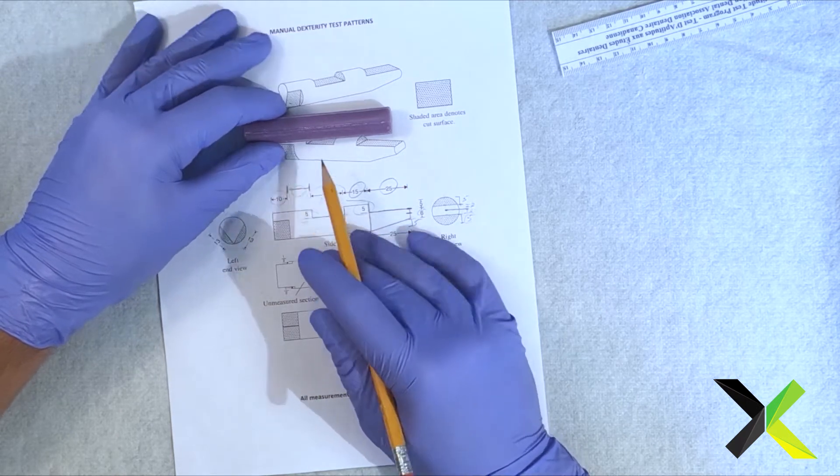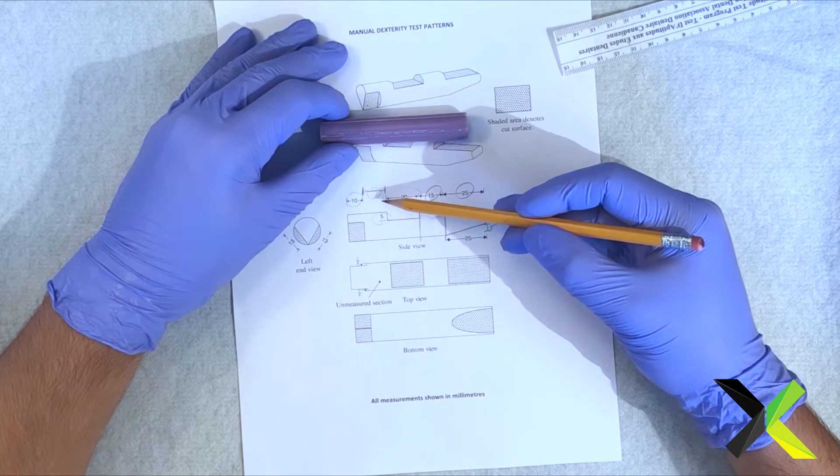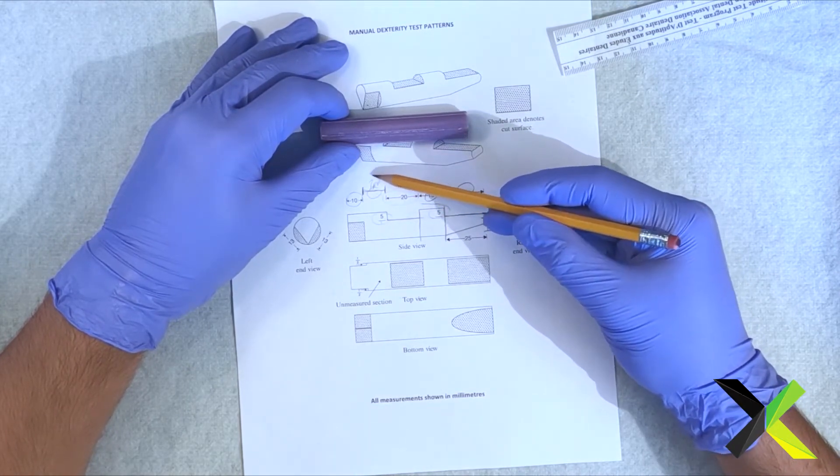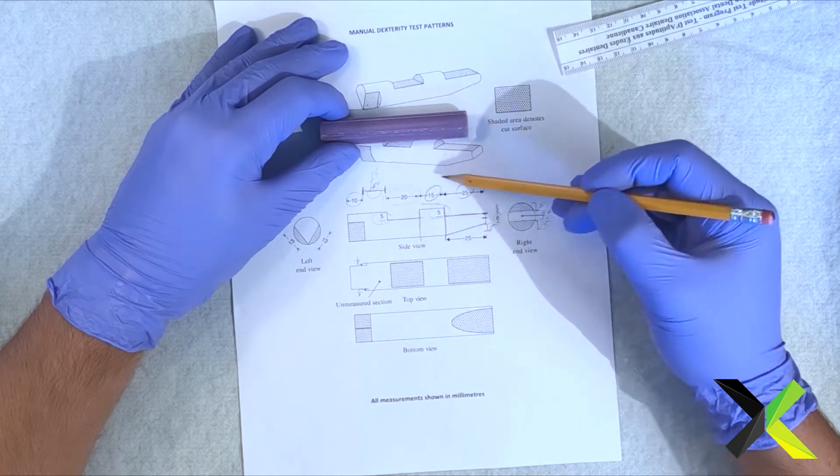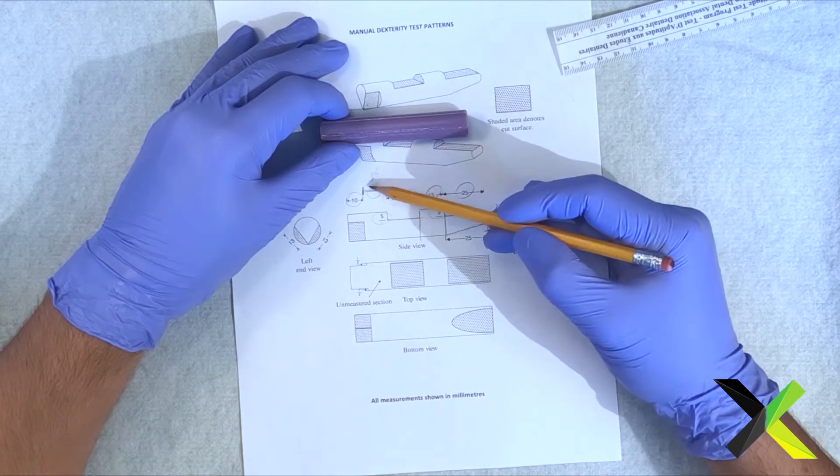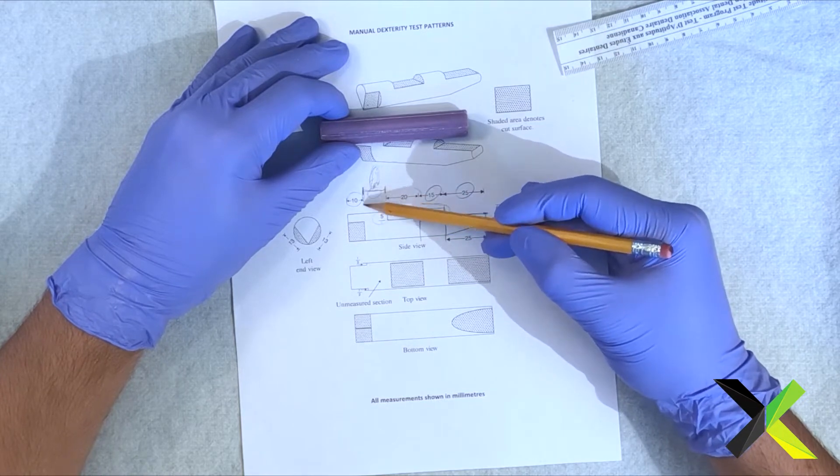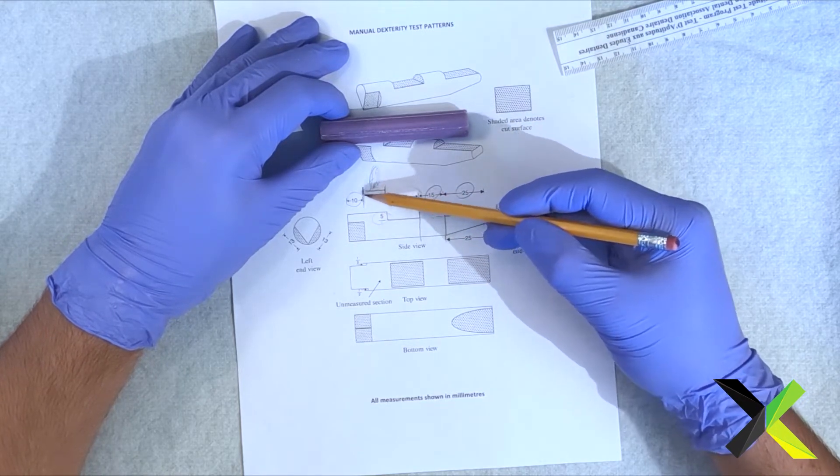This zone right here is not marked. It doesn't matter what you put in this zone. It could be 3 millimeters, it could be 25. Well, maybe not because that would be too much. There's no range as long as this distance is actually here. They're not going to mark this distance.